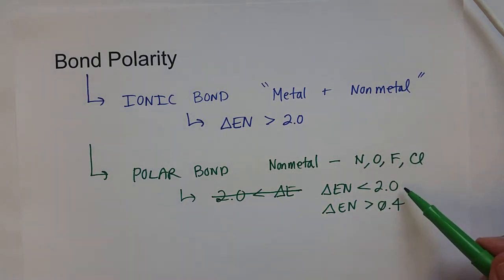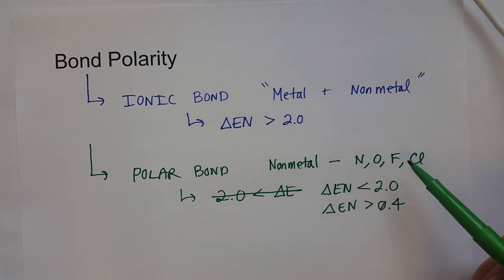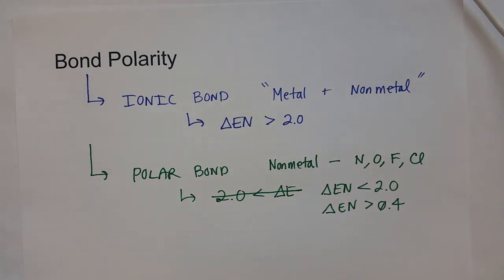If you ever wanted to be absolutely sure, you can do the calculation. But as long as they're not bonded to themselves, i.e. if fluorine is bonded to fluorine, there's no electronegativity difference. If it's a different nonmetal that's bonded to one of these four atoms, it's usually polar.